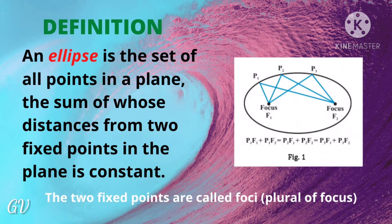We call the fixed points the foci — that is the plural form of focus. So two fixed points, F1 and F2. For any point P on the ellipse, F1P plus F2P is constant — the same value everywhere on the ellipse.